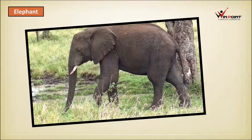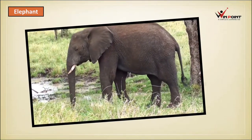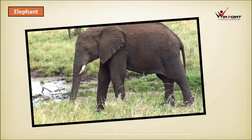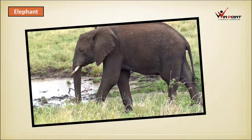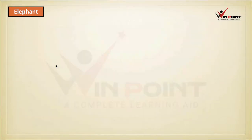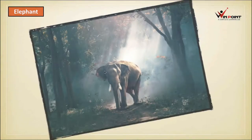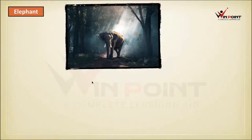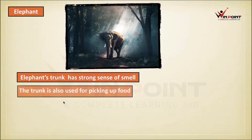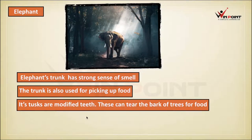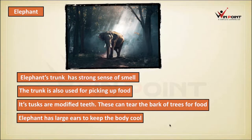Elephants have a lot of adaptations. The elephant's trunk has a strong sense of smell, and the trunk is also used for picking up food. Its tusks are modified teeth, which can tear the bark of trees for food.